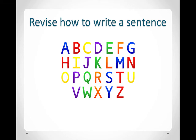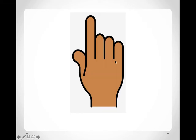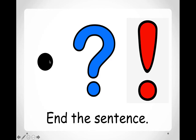Before we get started with the paragraph, I would like to quickly remind you how to write a sentence. How do you always start a new sentence? Amazing! You have to start a sentence with a capital letter. Don't forget to leave a finger space. And what do we do last? We have to end the sentence with a punctuation mark — we can use a full stop, a question mark if we're asking a question, or an exclamation mark if you're really excited or really angry. Any extreme emotion, use an exclamation mark.